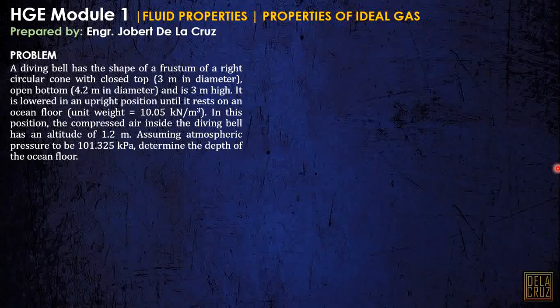Okay, let's have a problem on the properties of the ideal gas. A diving bell has a shape of a frustum of a right circular cone with a closed top 3 meters in diameter, open bottom 4.2 meters in diameter and is 3 meters high.